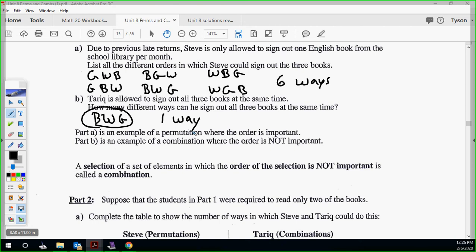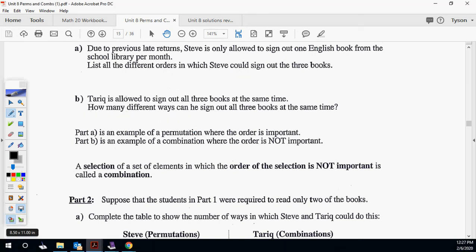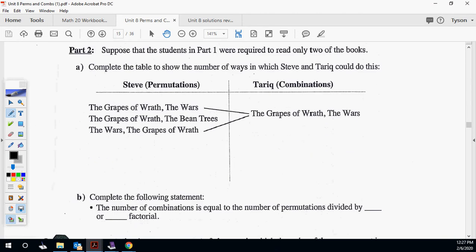So we're going to emphasize today the combination piece. We're looking at examples like Tariq more. A selection of a set of elements in which the order of the selection is not important is called a combination.